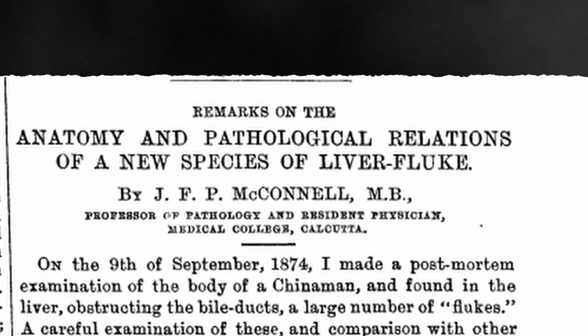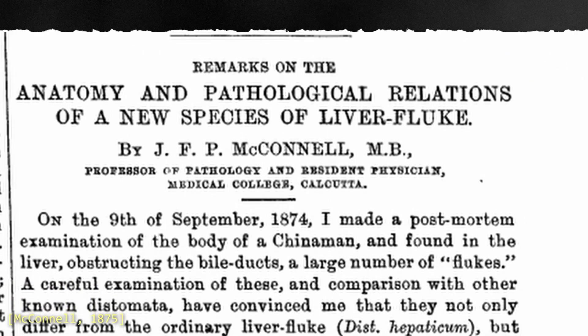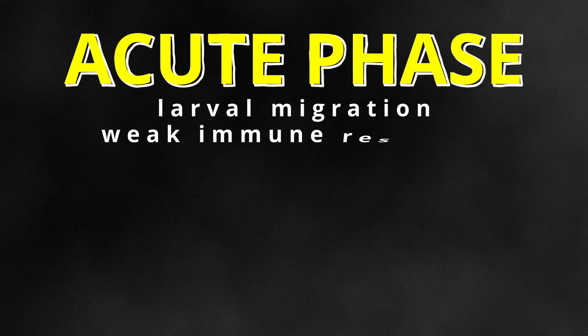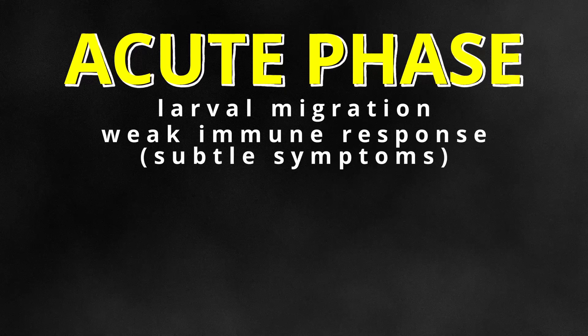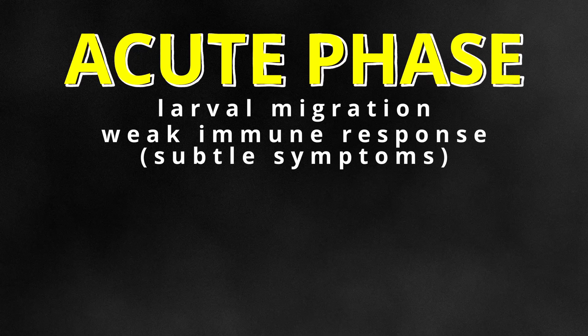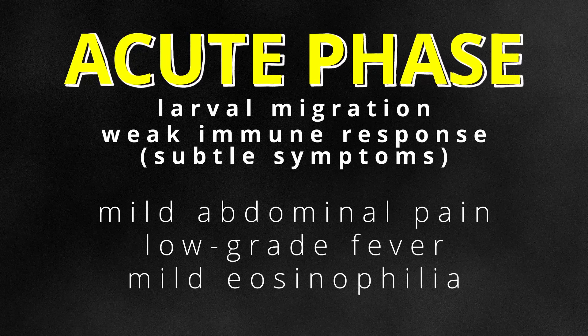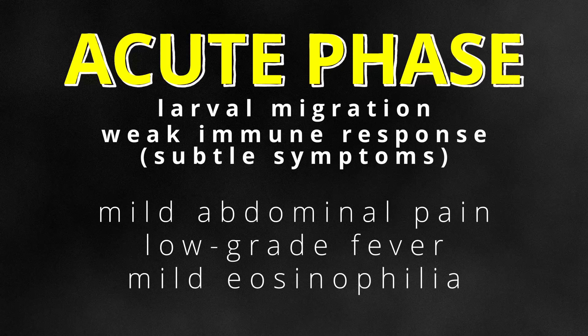The symptoms of Clonorchis and Opisthorchis infections can be divided into two phases: the acute larval migration phase and the chronic adult phase. During the acute phase, the larvae migrate to the biliary tract, but unlike Fasciola, they do not penetrate the intestinal mucosa and the liver parenchyma. The immune response during migration is less intense, leading to more subtle symptoms such as mild abdominal pain, low-grade fever, and mild eosinophilia. In some individuals, the acute phase can actually be subclinical, and symptoms are only recognized after the chronic phase develops.